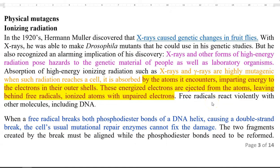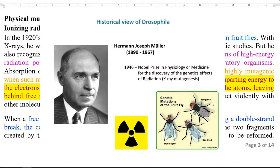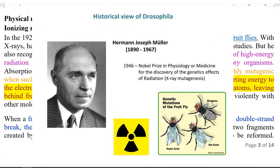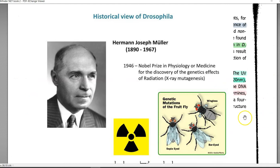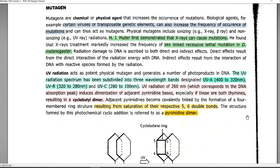Induction of mutation artificially was first done by Herman Muller when he subjected X-rays on fruit flies. When X-rays were passed into fruit flies, it caused certain mutations, mainly sex-linked recessive lethal mutations, in Drosophila melanogaster.